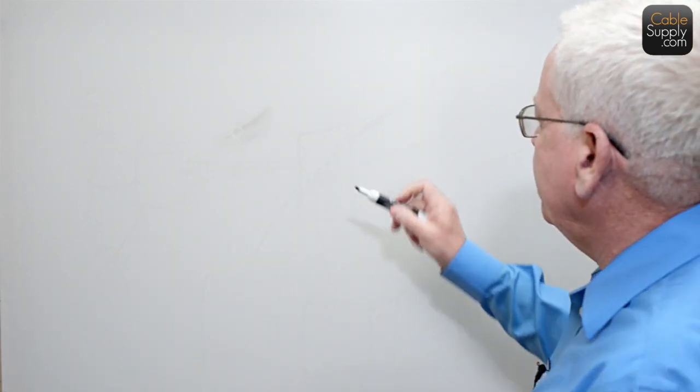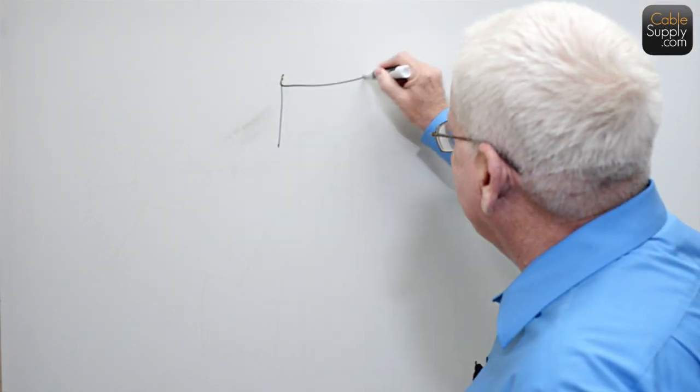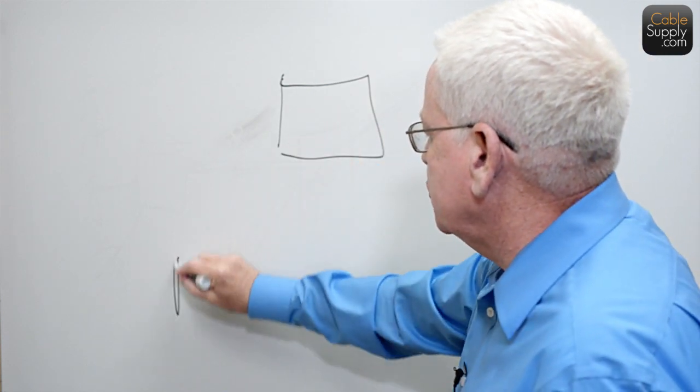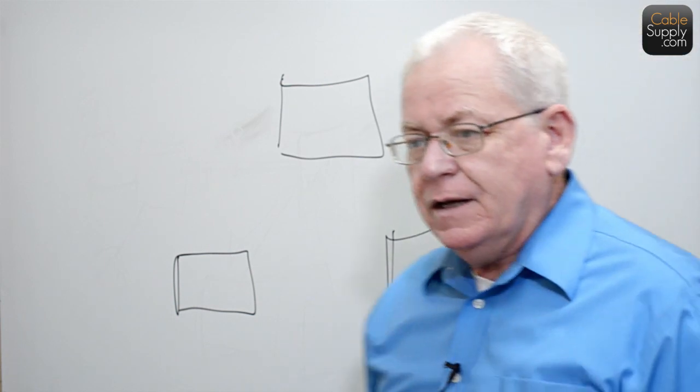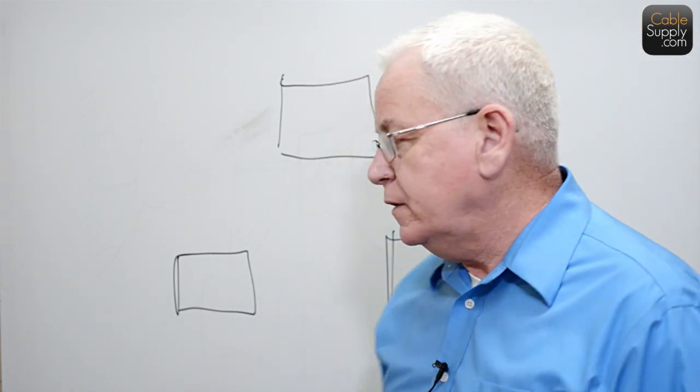So we want to talk about where managed and unmanaged switches are the same. One way is in what's called spanning tree protocol. What in the world is spanning tree protocol? Well, it's pretty simple. Let's say you have three switches connected, and this is not unusual, even with small switches. Just about every switch I know about has this protocol in it.